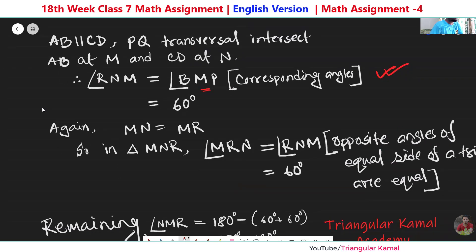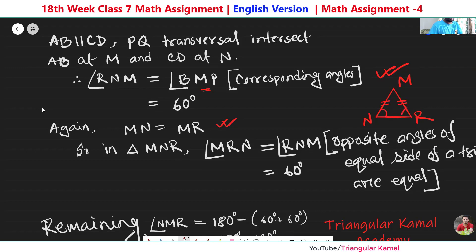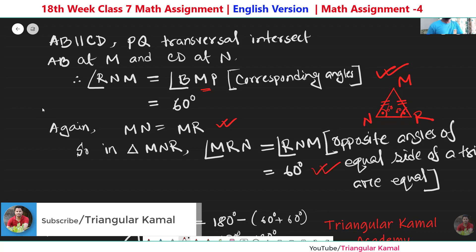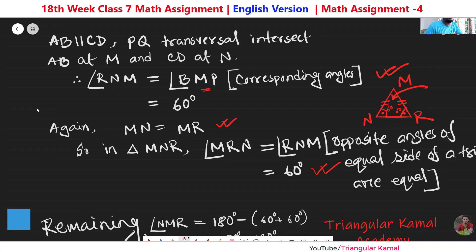Step two: it is given in the question that MN equals MR. In a triangle, if two sides are equal, their opposite angles must also be equal — equal sides have equal opposite angles. So in this triangle, the two angles opposite the equal sides are the same. Since we showed in step one that angle RNM is 60 degrees, the other base angle must also be 60 degrees.